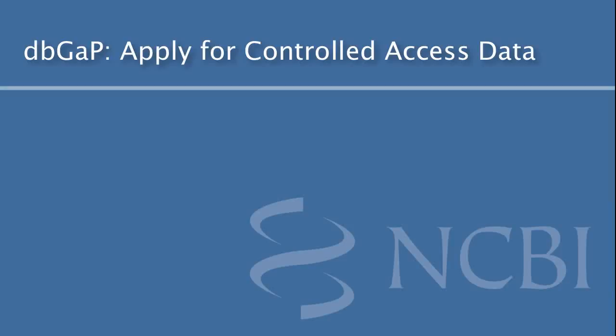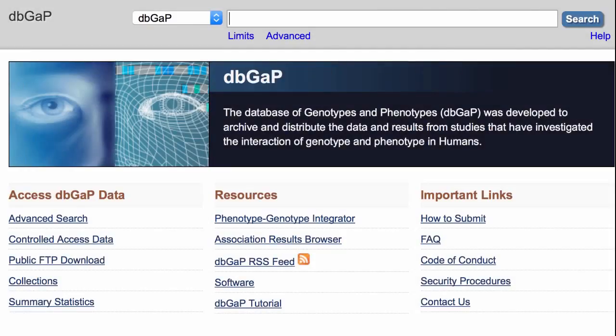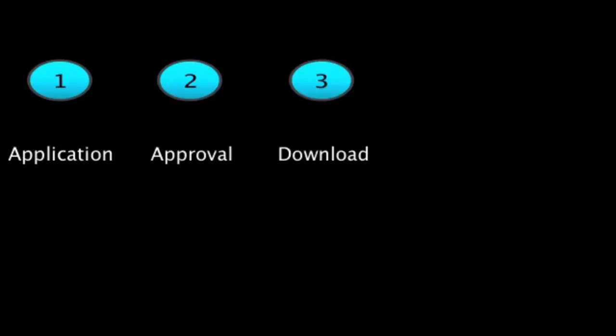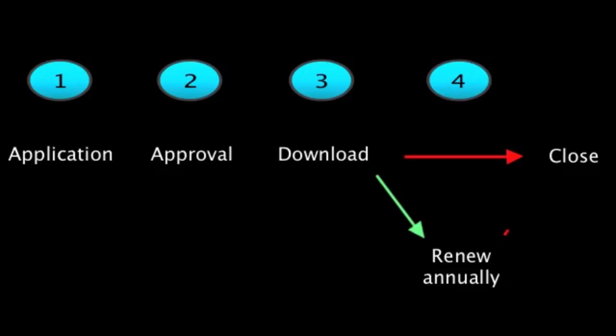This tutorial walks you through the steps to request access to controlled data in dbGaP. Overall there are four steps. The first, which is covered in this video, is your application for access. The second step is the approval process. The third is downloading the data. And the fourth requires that you either close out the project or renew it annually. The close out and renew steps each have their own video tutorials.